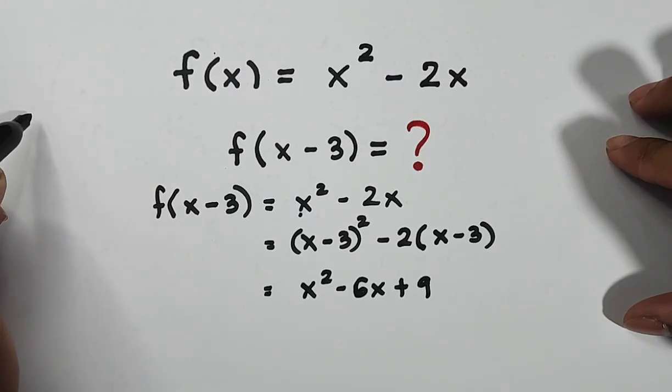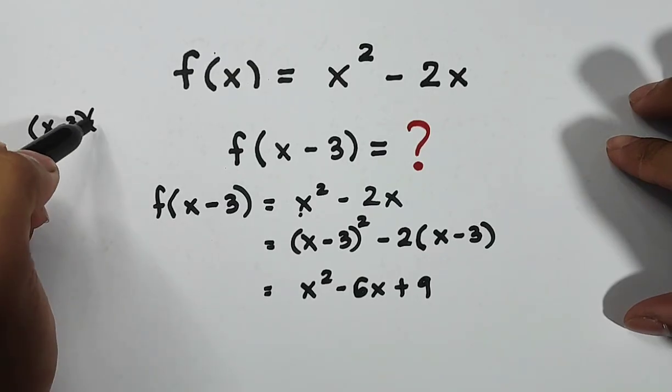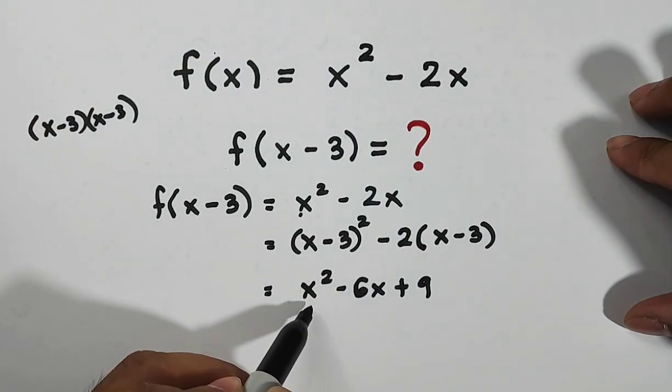This is an alternative solution. You can do foil method because your (x - 3) squared is the same as (x - 3) times (x - 3). So if you do foil method, it will become x squared minus 6x plus 9.